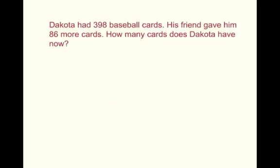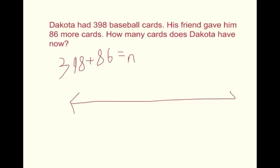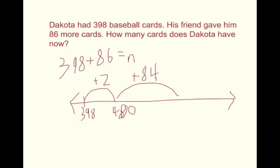Dakota had 398 baseball cards. His friend gave him 86 more cards. How many cards does Dakota have now? So, I'm going to do an addition number line, 398 plus 86 equals N. This is the number line, we'll start with 398 plus 2 equals 400, plus the 84 equals 484, so the answer would be 484.